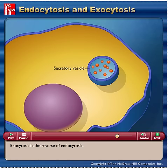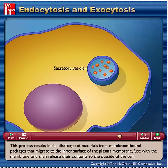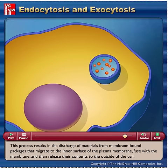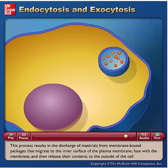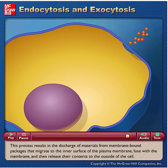Exocytosis is the reverse of endocytosis. This process results in the discharge of materials from membrane-bound packages that migrate to the inner surface of the plasma membrane, fuse with the membrane, and then release their contents to the outside of the cell.